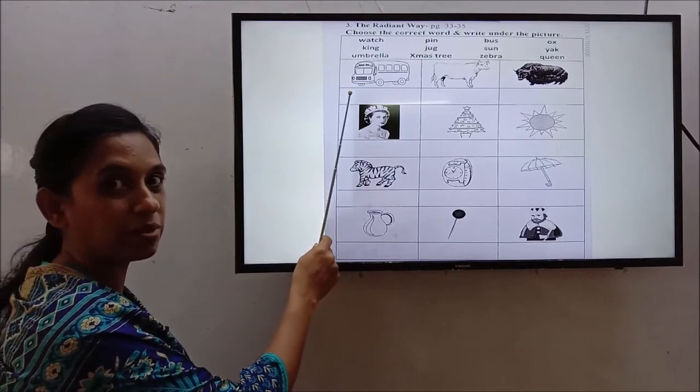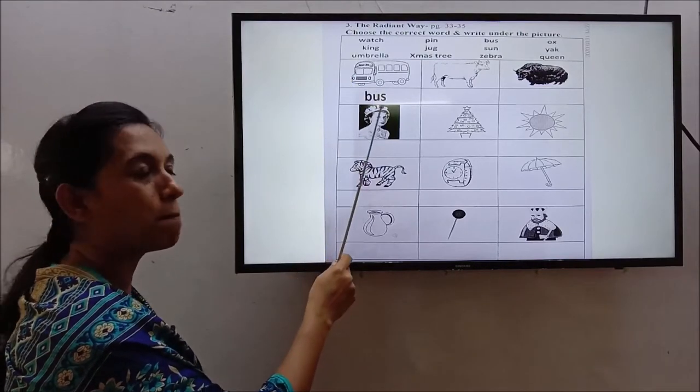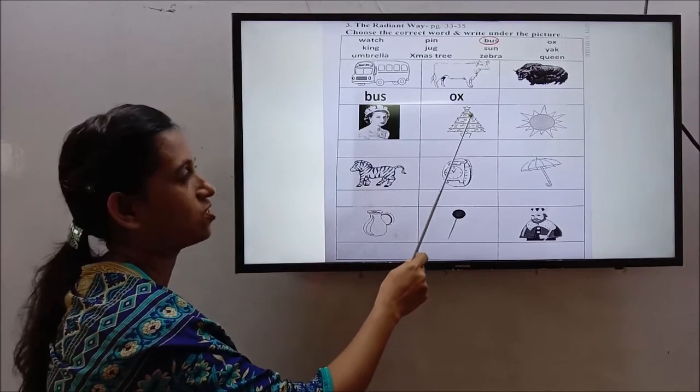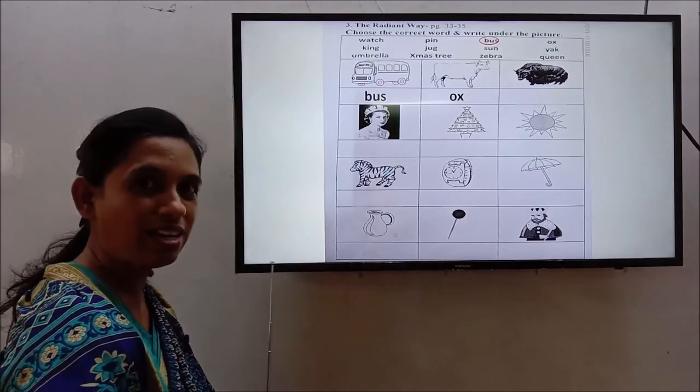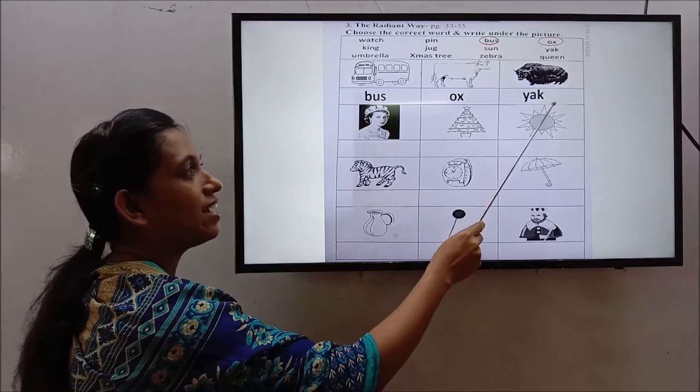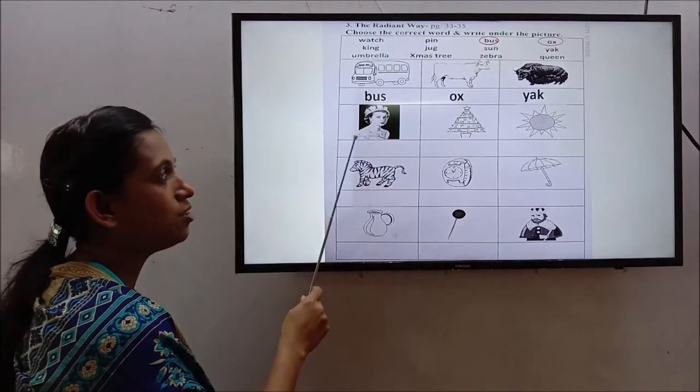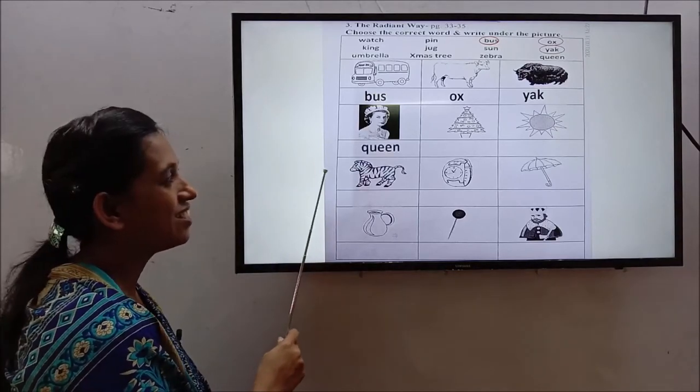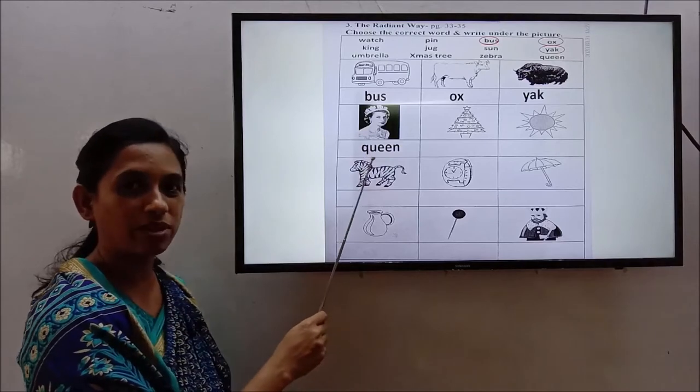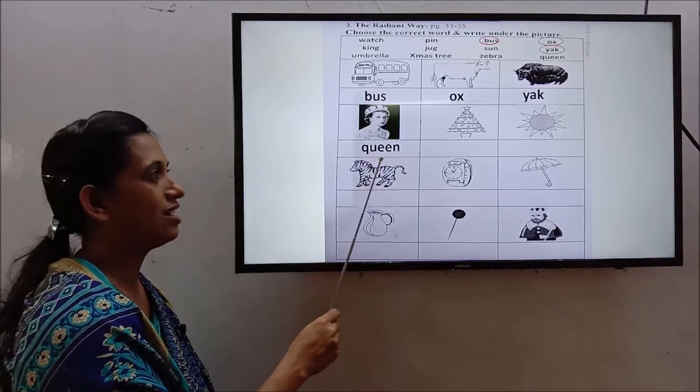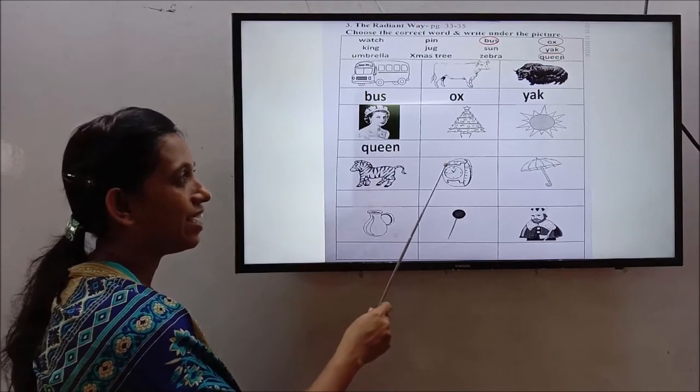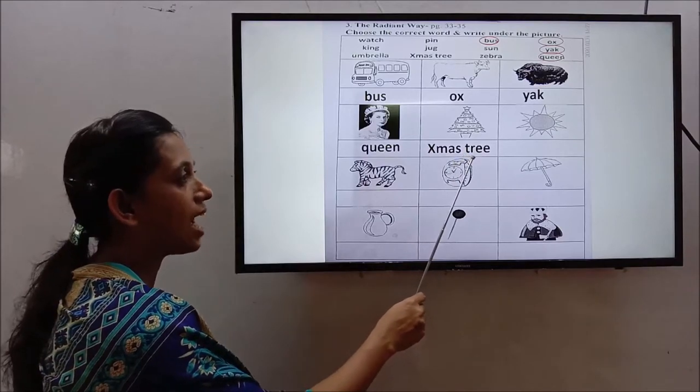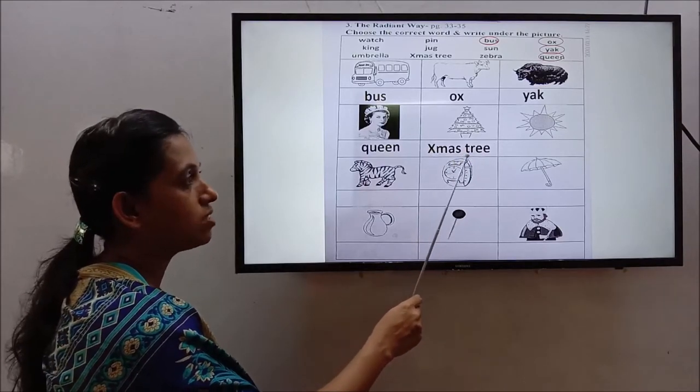What is this? Can you tell me? Yes, bus, bus. What is this one? Ox. O-X. Ox. Yes. Can you tell me what is this one? Yak. Y-A-K. Yak. Now, can you tell me what is this one? Who is she? Queen. Queen. Q-U-E-E-N. Queen. What is this? Christmas tree. X-M-A-S mass. T-R-E-E. Christmas tree.